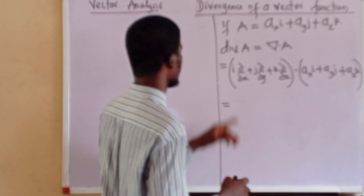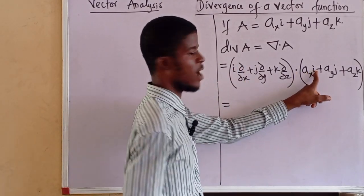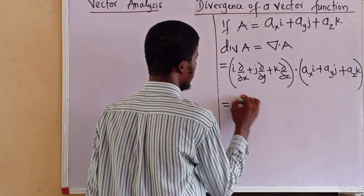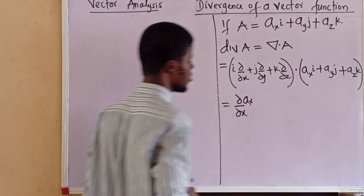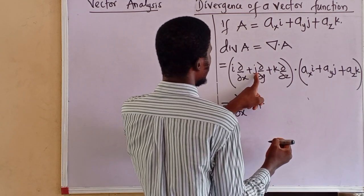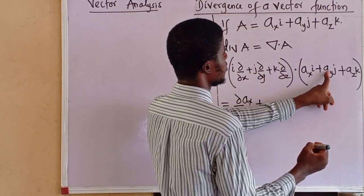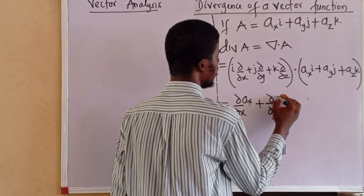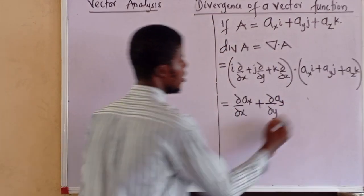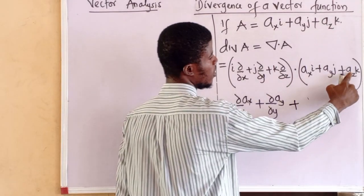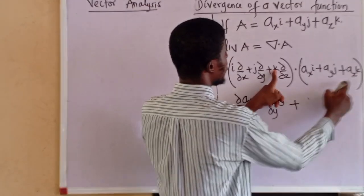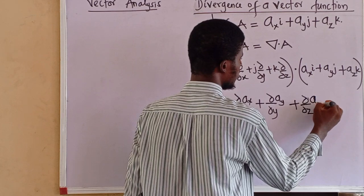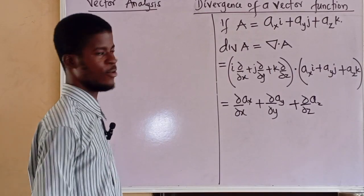For this dot product: i·(∂/∂x) dotted with Ax·i — multiply the coefficient of i in both — gives ∂Ax/∂x. Then j·(∂/∂y) dotted with Ay·j gives ∂Ay/∂y. And k·(∂/∂z) dotted with Az·k gives ∂Az/∂z. So this is the divergence of vector A.